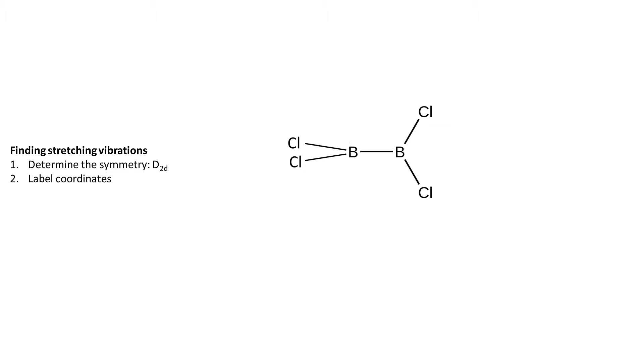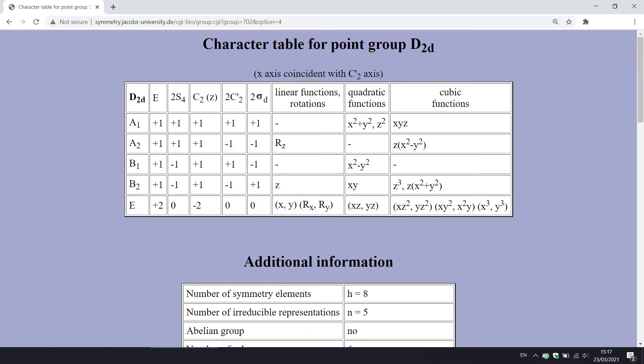Next let's decide on the orientation of axes. I recommend to you this website with character tables because they are well made. For instance, for D2D the character table clearly states that the Z axis has to contain the boron-boron bond.